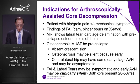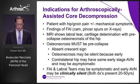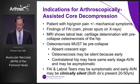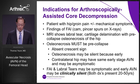Regarding indications, you may have a patient with hip or groin pain, plus or minus mechanical symptoms, with findings of FAI on x-rays including cam and pincer spurs. MRI may show a labral tear and cartilage delamination with pre-collapse osteonecrosis. The osteonecrosis must be pre-collapsed for core decompression to work, meaning there must be no crescent sign. The osteonecrosis is likely silent and asymptomatic because it is early, and the FAI and labral tears tend to be the source of symptomatic pain.